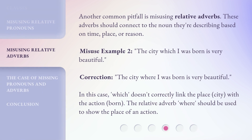Another common pitfall is misusing relative adverbs. These adverbs should connect to the noun they're describing based on time, place, or reason. Misuse Example 2: 'The city which I was born is very beautiful.' Correction: 'The city where I was born is very beautiful.' In this case, 'which' doesn't correctly link the place — city — with the action — born. The relative adverb 'where' should be used to show the place of an action.